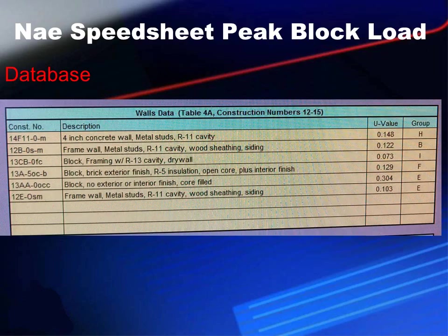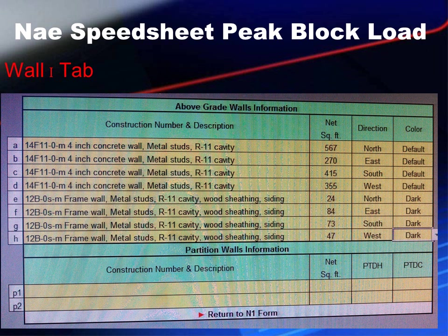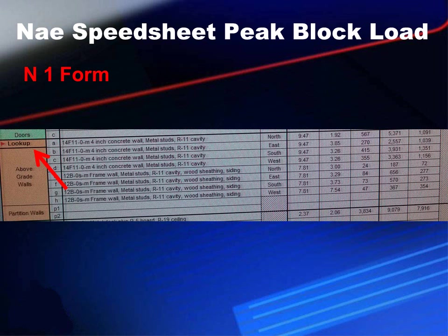Next, we go to the database again and look up the wall section. We find the construction numbers that match the building in Manual N and enter those in, along with the descriptions, U-values, and group values. Then we hit the Wall 1 tab — we have A through H wall types to select from. We click the scroll-downs to select the wall type for each section, fill in the square footage, the direction the wall is facing, and the color. At the bottom of the page, we return to the N1 form to finish.